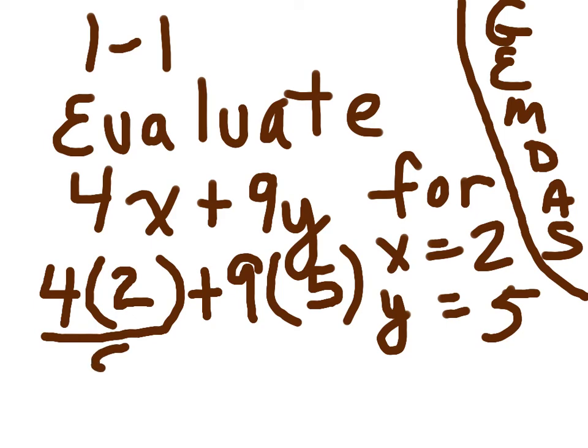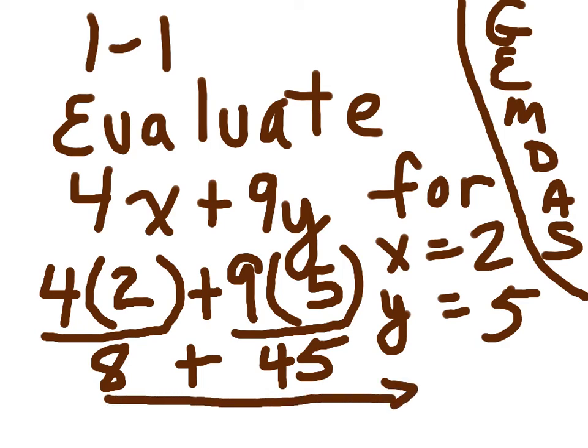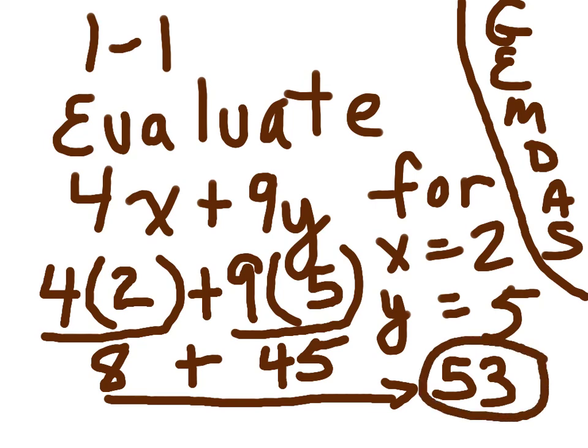So we need to do 4 times 2 is 8. We need to do 9 times 5, which is 45. And lastly, we need to add these two numbers. Do you know what 8 plus 45 is? It is 53. We have evaluated our expression by substituting the correct values for the variables.